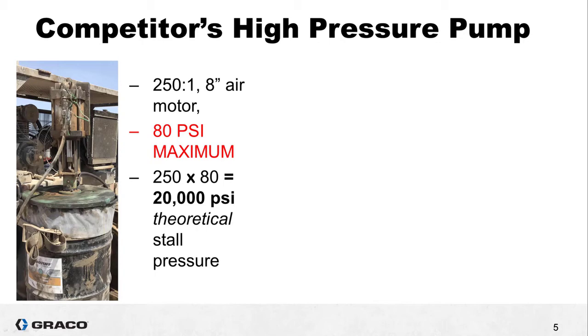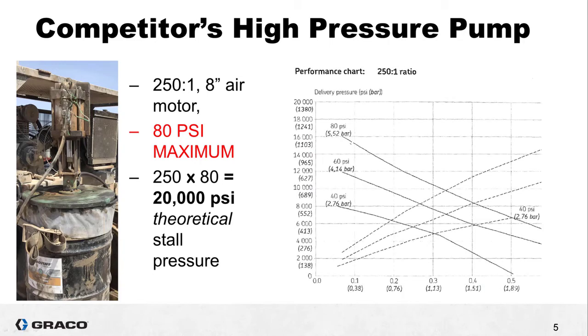Since they state their ratio as 250 to 1 and the maximum air pressure is 80 psi we should be able to multiply 250 times 80 and get the stall pressure. 250 times 80 equals 20,000 psi which is the theoretical stall pressure. But theory is one thing and the real world is another. In the real world our competitors pump stalls at around 18,500 psi in one direction and only 16,000 psi in the other.